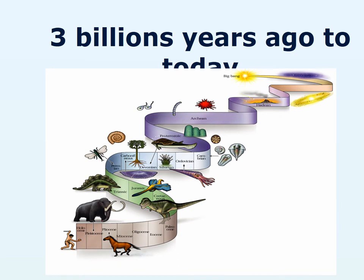This is a brief history from 3 billion years ago to today. We've got the Big Bang at the back, volcanoes, and the evolution of the Earth's atmosphere. Then we've got viruses and single-celled organisms, then moving organisms, dinosaurs, horses, and then man right at the bottom. This is another beautiful visual representation of how different species evolved at different times.